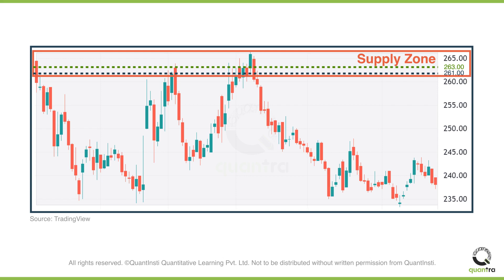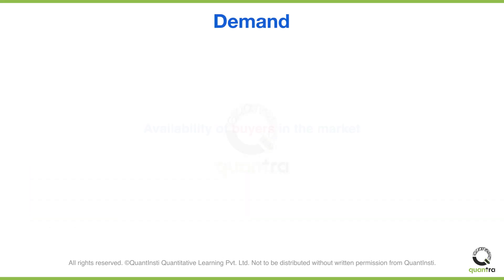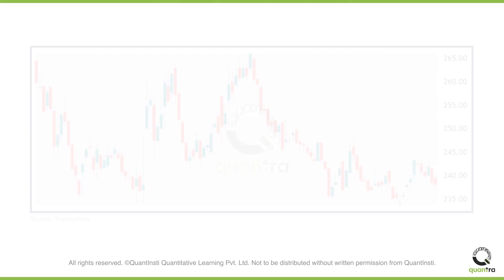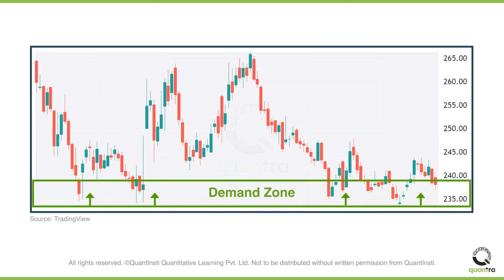Now that you understand the concepts of supply and supply zone, we will understand what demand is and how you can identify demand zones. Demand is generated when there is an availability of buyers in the market, and it is a phenomenon that occurs when buying overtakes selling. Whenever there is an increase in buyers and the buyers are more than sellers, there would be a formation of a demand zone.